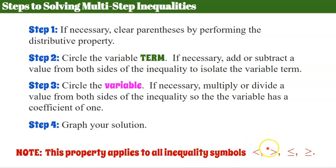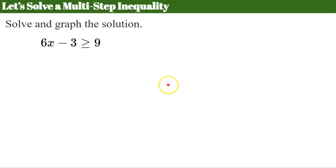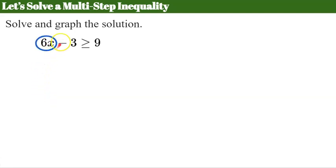So let's dig in and solve a multi-step inequality. This is called multi-step because it's going to take two steps to find the solution set. The first thing I want to do — there are no parentheses, so I don't need to distribute — but I'm going to isolate this variable term first.